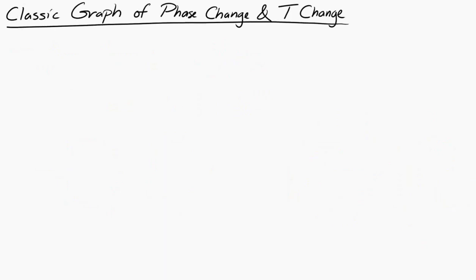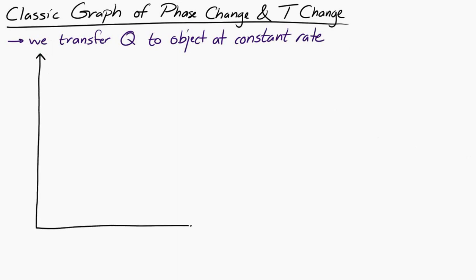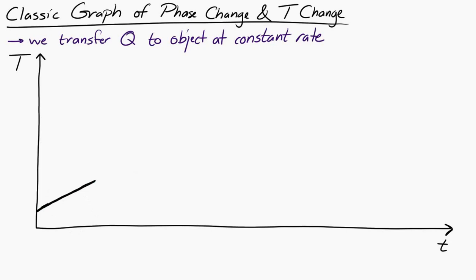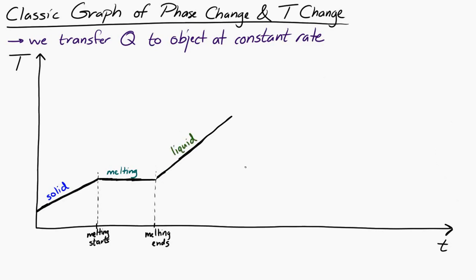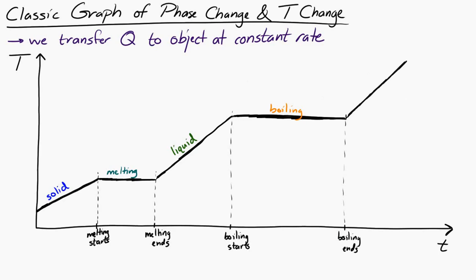Now we're going to look at a classic graph. Imagine a situation where we are transferring thermal energy to an object at a constant rate. The graph is temperature of the object versus time, and the object starts as a solid. As we transfer thermal energy, the temperature goes up until it starts to melt. Once it starts to melt, the temperature remains constant until the phase change is complete — until we've completely changed it to a liquid. Once it's completely a liquid, the temperature goes up again until it reaches its boiling point, at which point the temperature stays constant until we've completely changed from a liquid to a gas. Once it's completely a gas, the temperature goes up again.